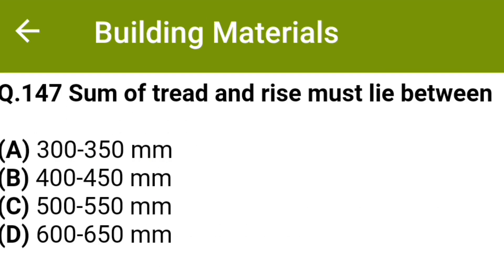The sum of tread and riser must lie between: option A 300 to 350 mm, option B 400 to 450 mm, option C 500 to 550 mm, option D 600 to 650 mm. The correct answer is option B, 400 to 450 mm.